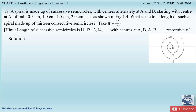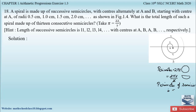First of all let us know how to calculate the length of a circle. The perimeter of a circle is 2πr. Since here we are taking semicircles into consideration, the perimeter will be half of 2πr, that is 2πr/2. The 2s cancel, therefore the perimeter of a semicircle is πr. Make a note of this.